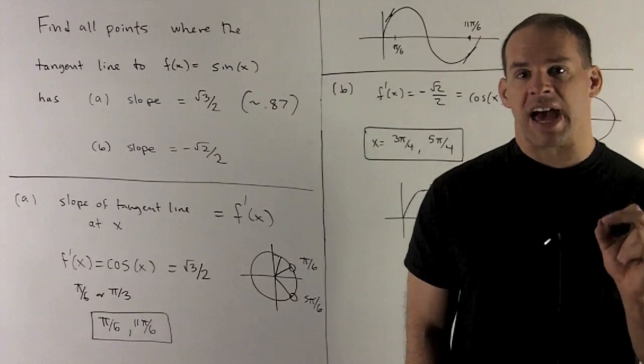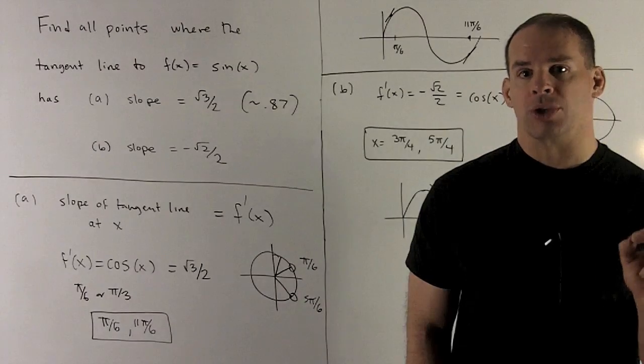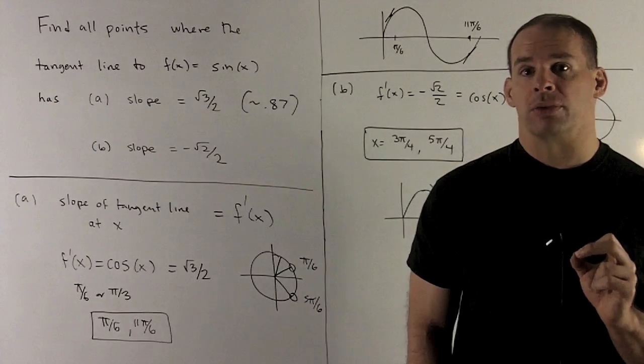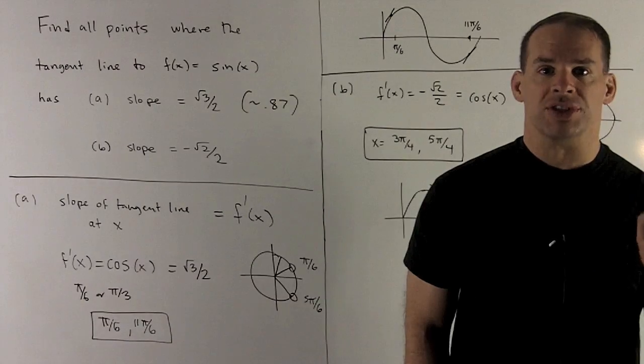The derivative of sine is cosine, so what we're trying to do here is find all points where the cosine of x is equal to square root of 3 over 2. Here we'll just find the ones that are between 0 and 2 pi.